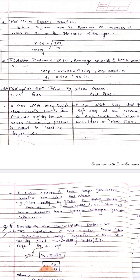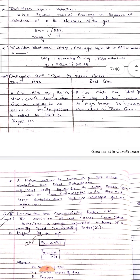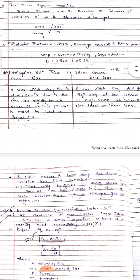For example, easily liquefiable and highly soluble gases such as carbon monoxide, ammonia, and sulfur dioxide show much larger deviation from ideal behavior than gases like hydrogen, nitrogen, and oxygen.